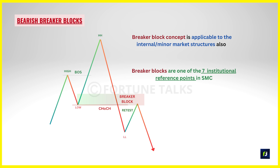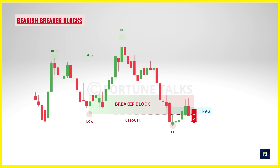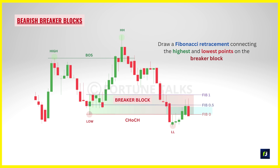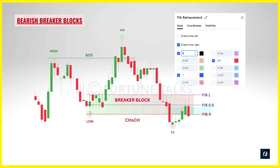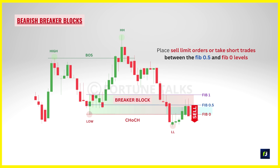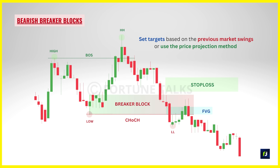Breaker blocks are one of the 7 institutional reference points in SMC, very important when using PDRIs. When price returns to the bearish breaker block and moves lower, we can look to enter short trades. Draw a Fibonacci retracement connecting the highest and lowest points of the breaker block, using only the 0%, 50%, and 100% levels. Place sell limit orders between Fib 0.5 and Fib 0. Set your stop loss above the breaker block or above the Fib 1 level. Targets can be based on previous market swings or the price projection method.